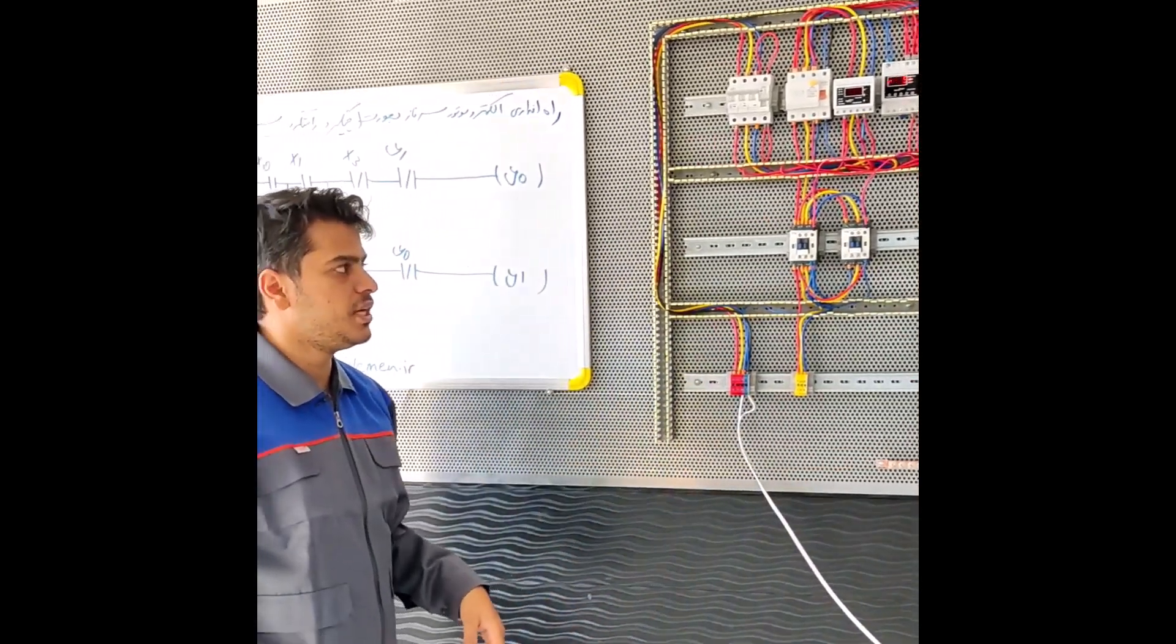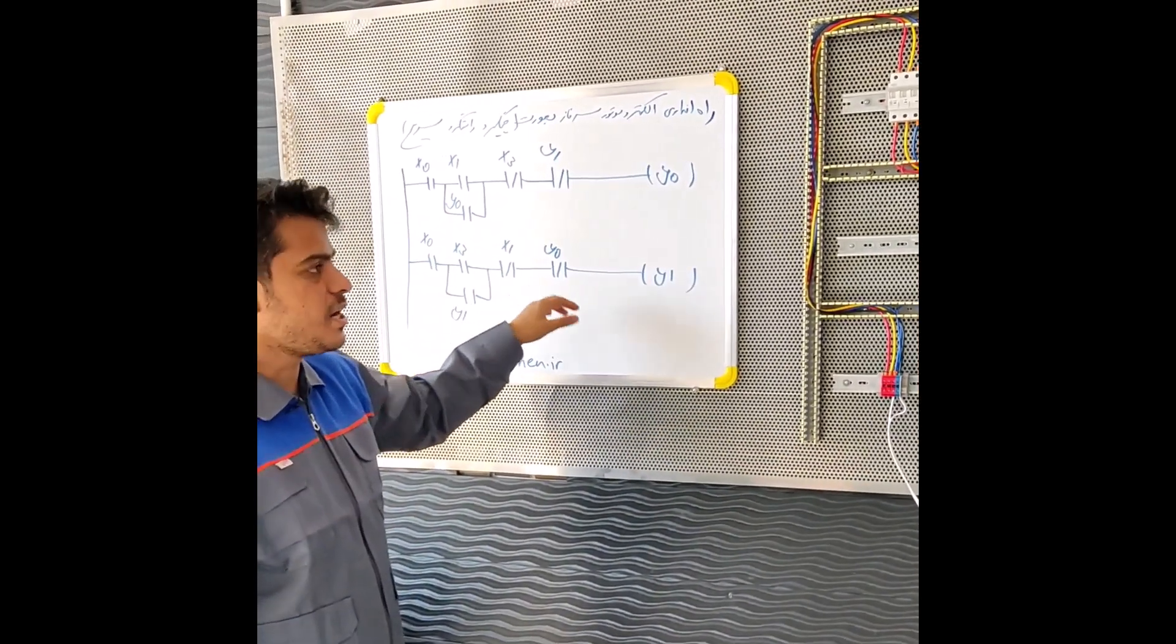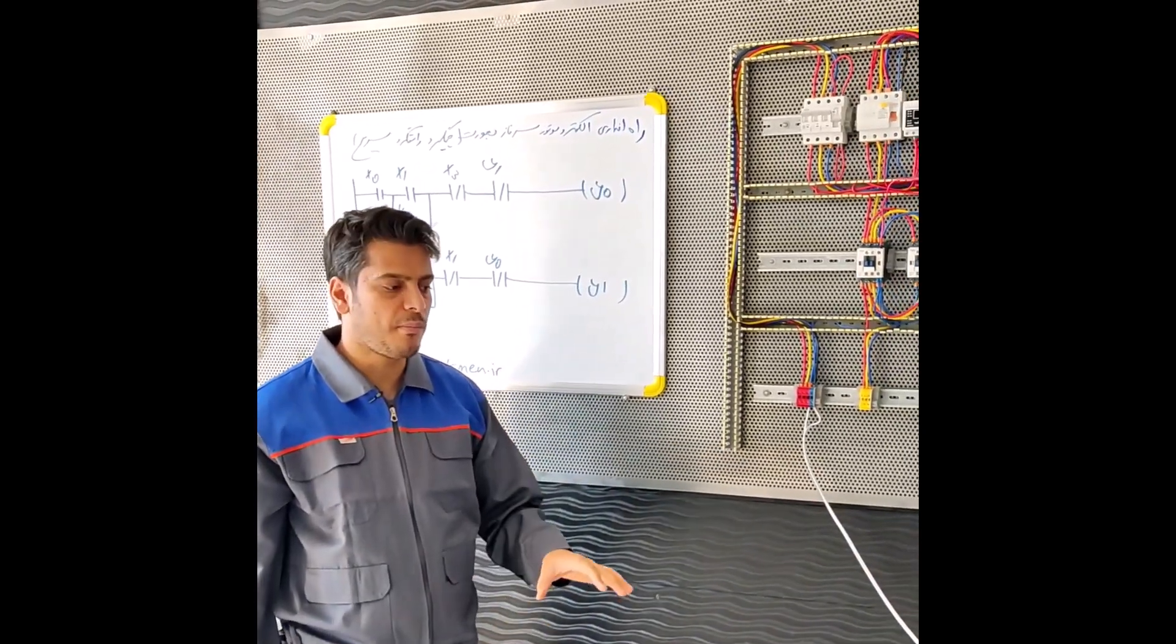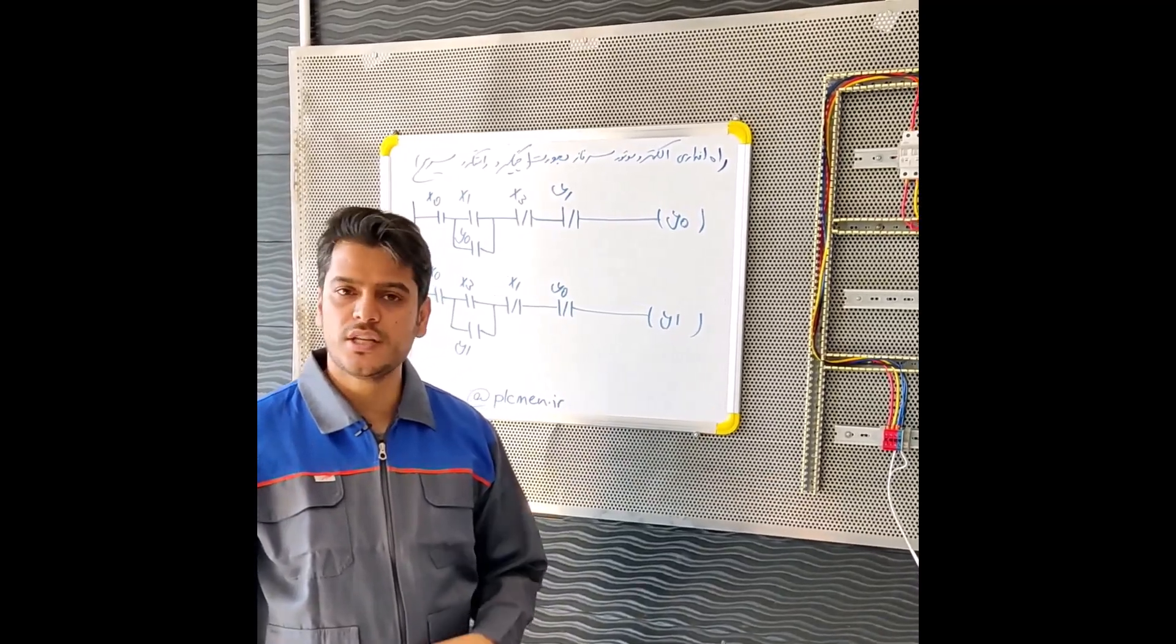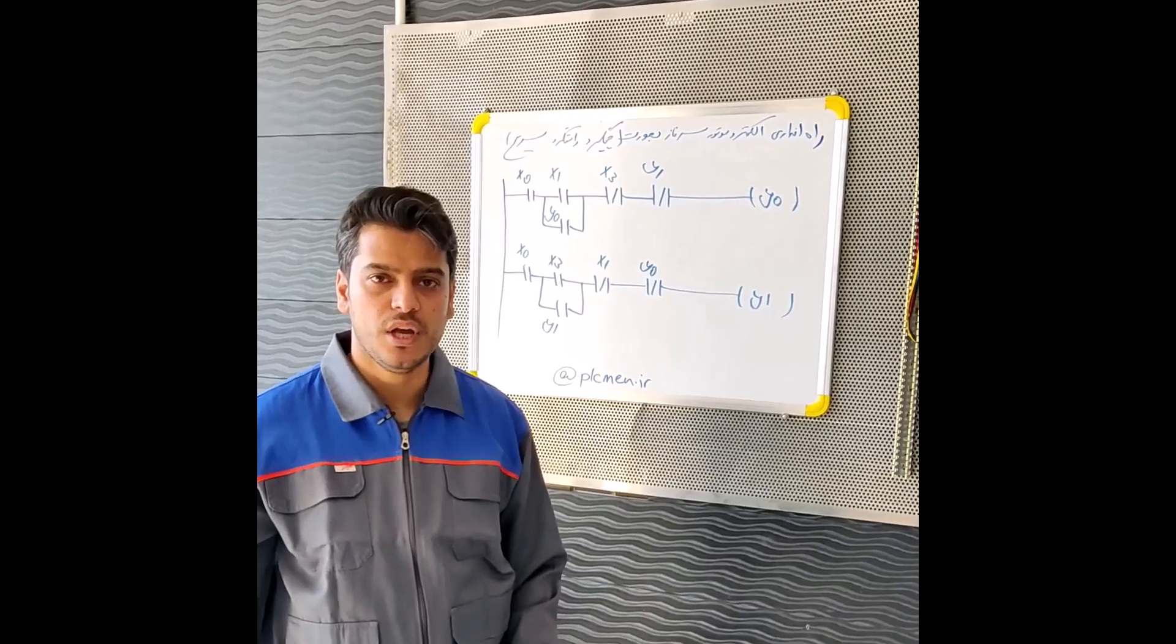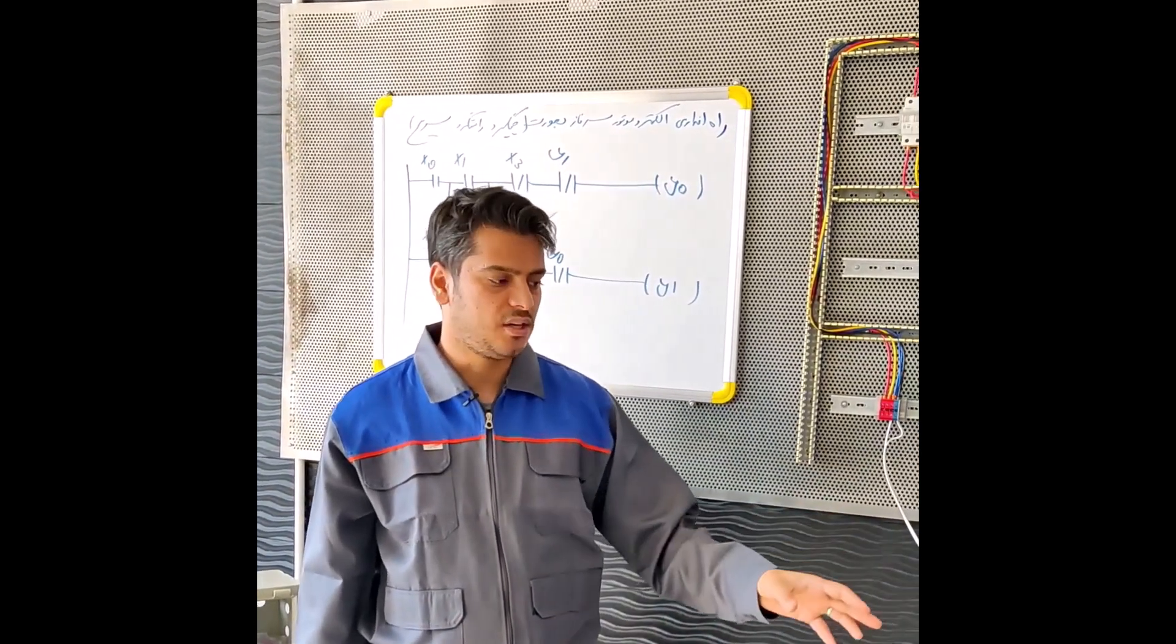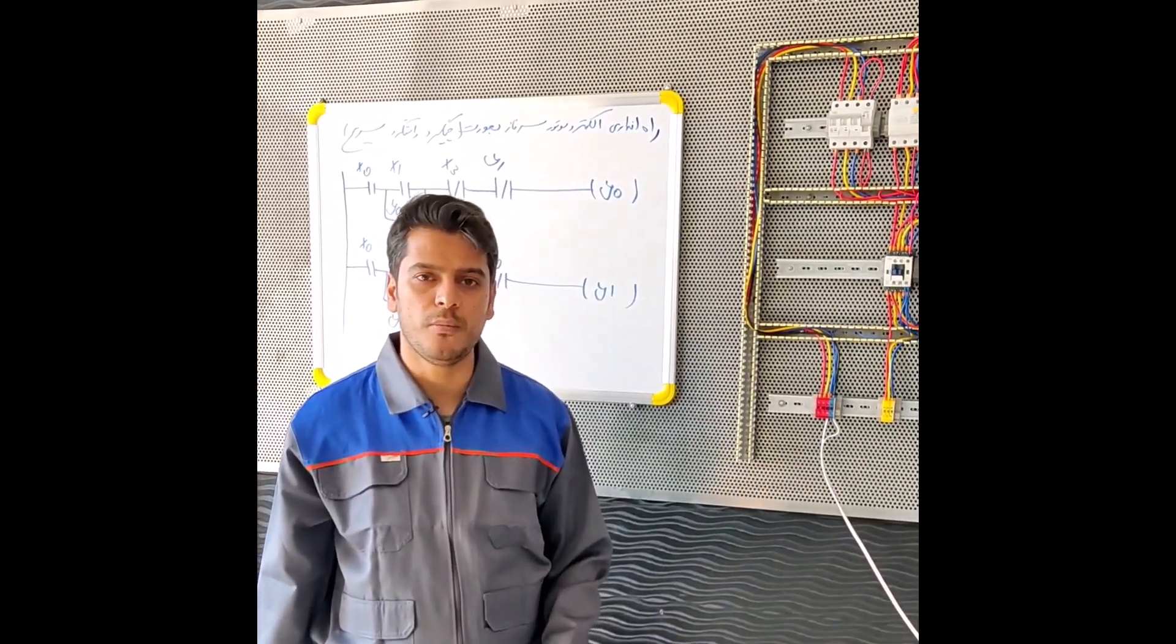This program is currently unprotected. We only need to change the program inside the PLC to make it start-stop with full protection. There is no need to change the wiring. With the changes we make in the PLC program, the motor will be started with full protection, which I will explain in the next video.